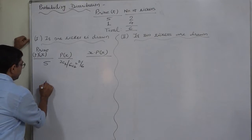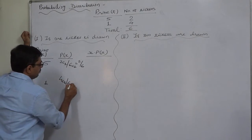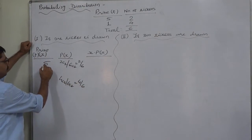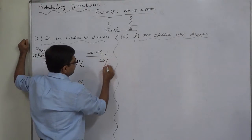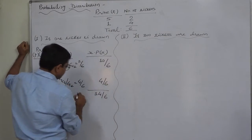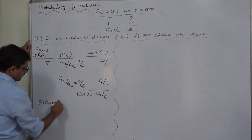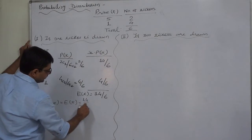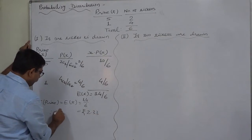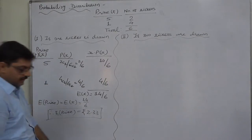For rupee one, there are four tickets, so the favorable cases are 4C1 out of 6C1, giving 4 by 6. Calculating expected value: 5 times 2/6 is 10/6, and 1 times 4/6 is 4/6, so E(X) equals 14 by 6, which is rupees 2.33. So if one ticket is drawn, the expected price is rupees 2.33.